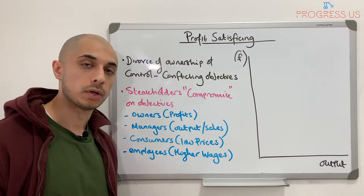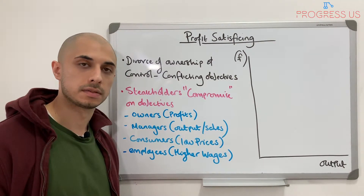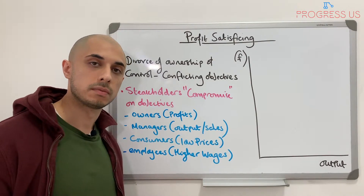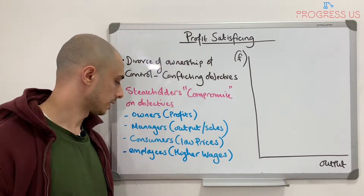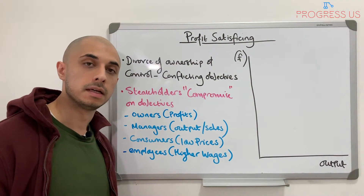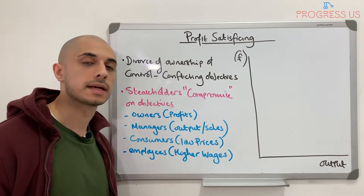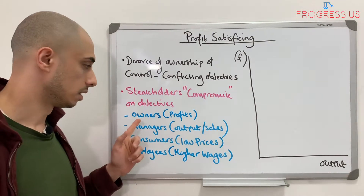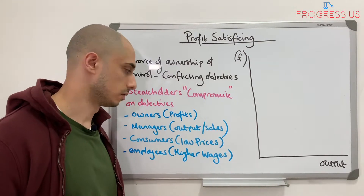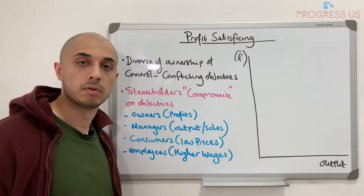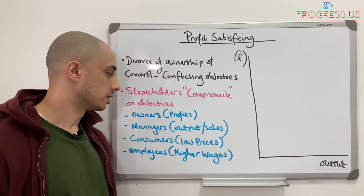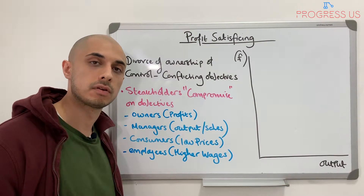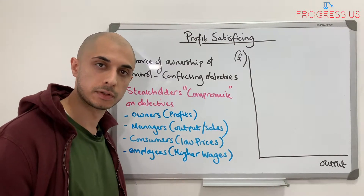Each stakeholder has a different type of interest in the outcome of the firm. As rational economists looking to maximise utility, each of these stakeholders also looks to maximise their own utility. Owners look to maximise their investment and therefore want more dividends, i.e. more profits. Managers look to maximise their wages or benefits linked to the amount of sales the company makes, which they're essentially responsible for.